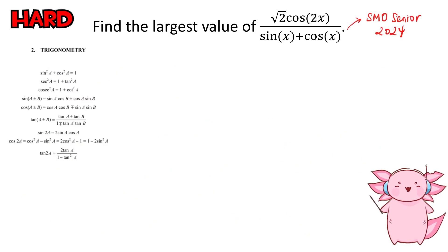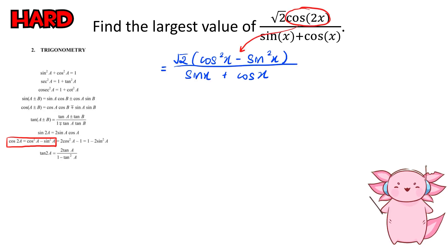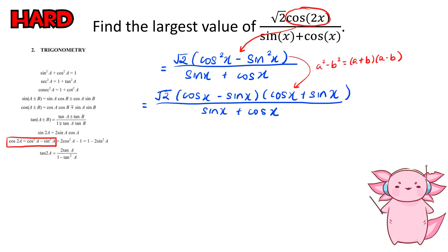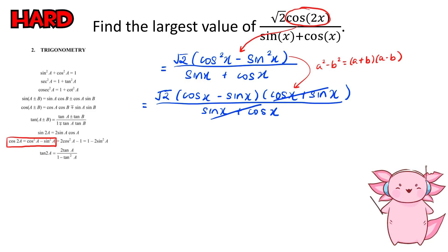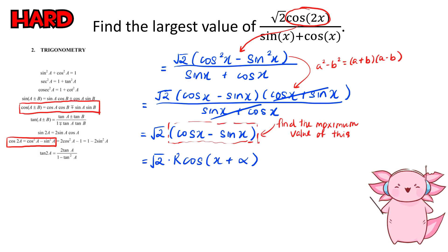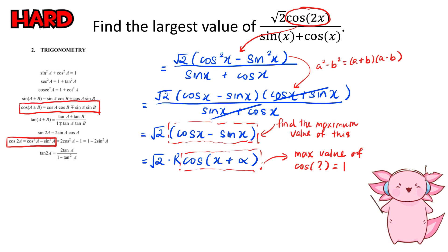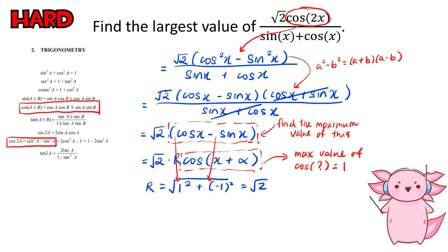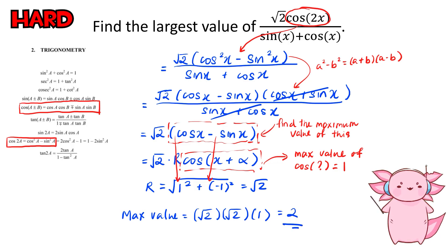This one is from this year's Singapore Math Olympiad. The first step is to use trig identities to convert cos(2x) into cos²x minus sin²x, which we rewrite as (cos x + sin x)(cos x minus sin x), and we can cancel with the denominator. To find the maximum value of cos x minus sin x, we convert it into the r-formula, r·cos(x + α). The maximum value of cosine of anything is 1, so we calculate r to get √2. The answer is √2 times √2, which gives us 2.